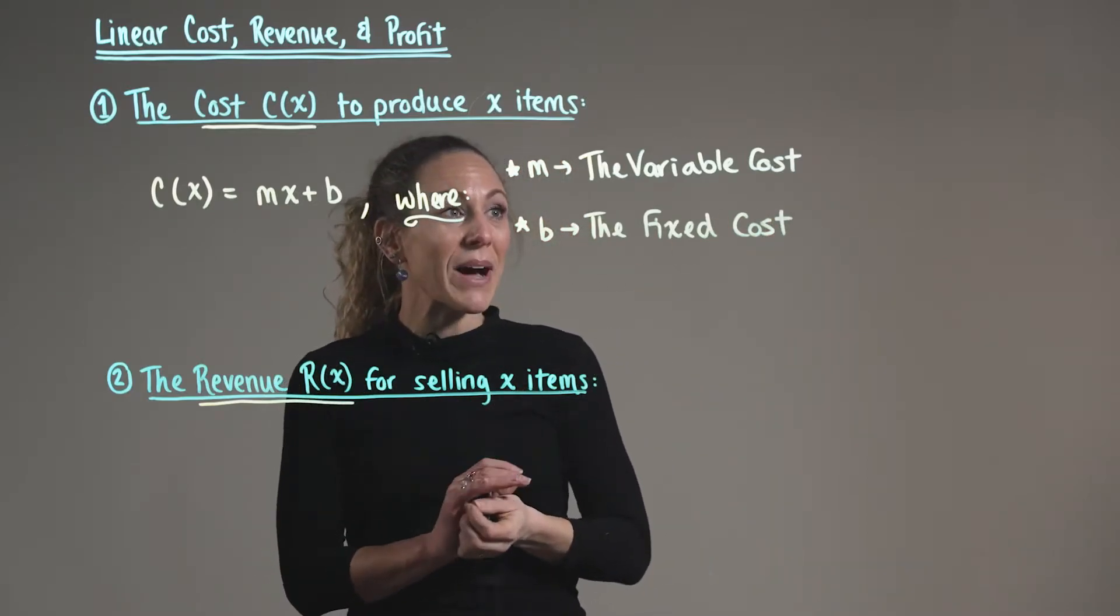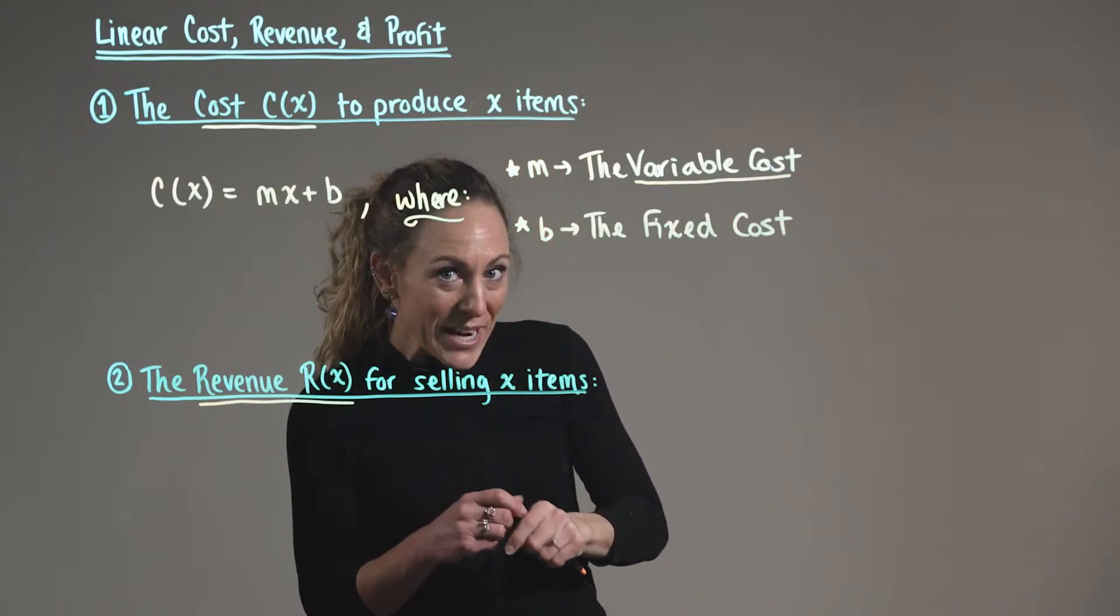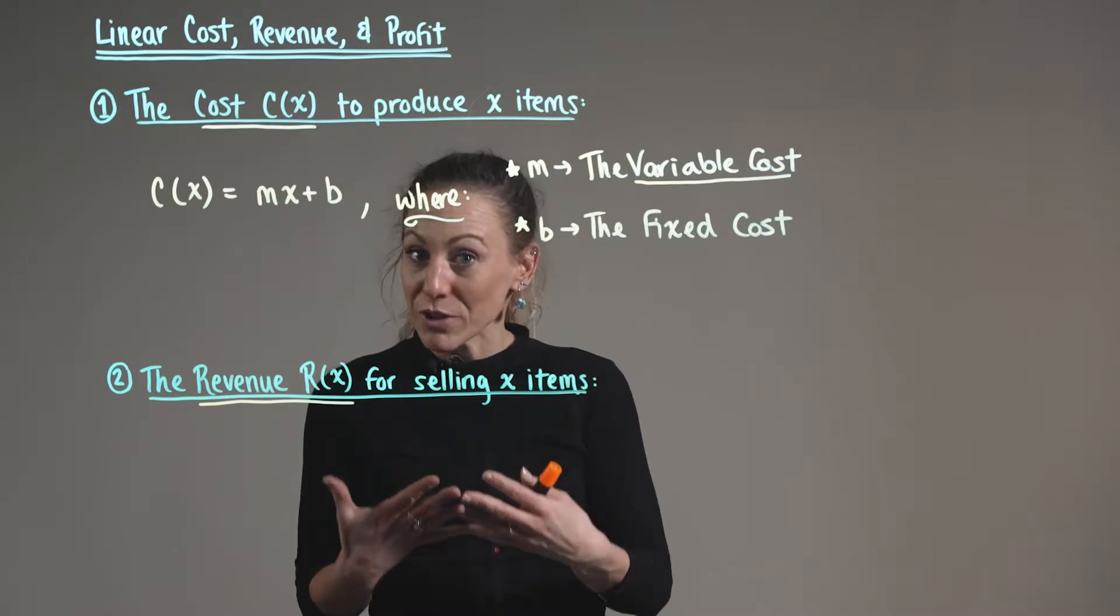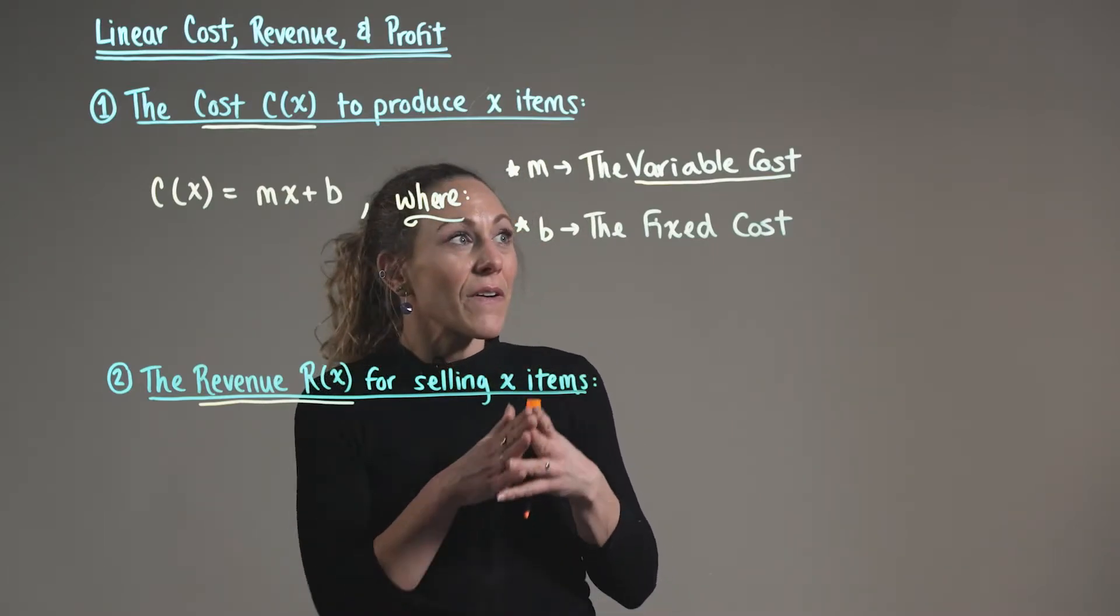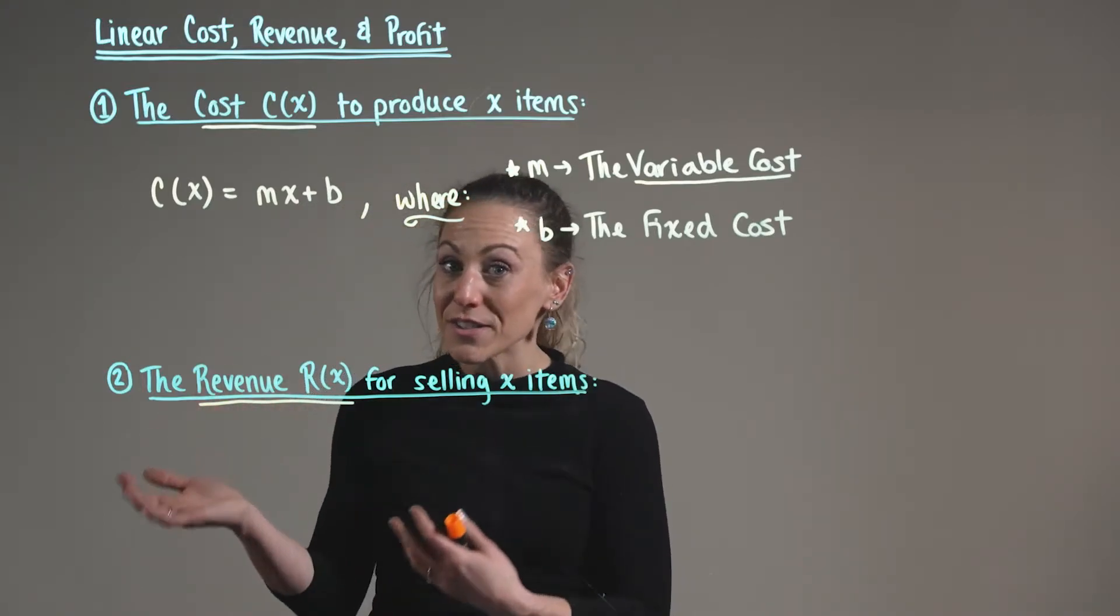Keep in mind here, when we talk about our variable cost, this is the rate at which the cost is increasing relative to production. Examples of variable cost include the cost of materials or the cost of labor.